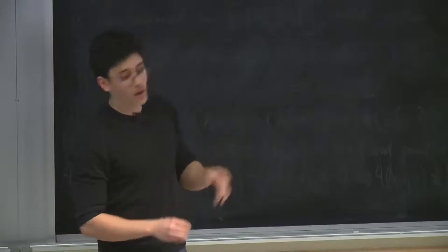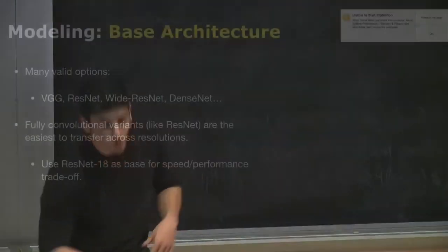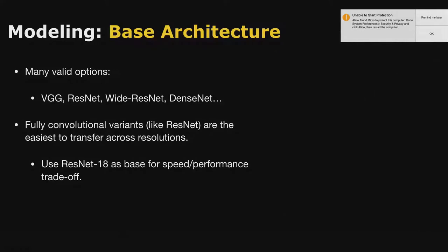One thing we wanted to investigate is the base architecture. There are quite a few valid options that get reasonable performance on ImageNet - things like VGG, WideResNets, and ResNets. In my experience they all perform fairly similarly, so it's more of a speed-benefit tradeoff. There's an advantage to using fully convolutional architectures because if you have fully connected layers that assume a specific dimensionality, you can convert them to convolutional layers - but it's just more convenient to start with a fully convolutional architecture that's resolution-invariant.